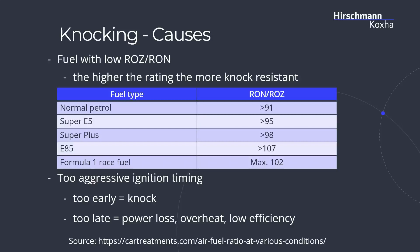Another problem is too aggressive ignition timing. If we ignite too early, this will cause knocking. If we ignite too late — so when the piston is beyond top dead center, beyond its highest position — we will lose power, might even overheat, and of course we will lose efficiency.